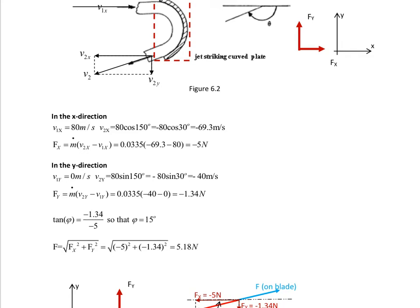If you look at the momentum equation, the X direction entering leaving is 80 cos 150 or minus 80 cos 30, which is minus 69.3 meters. We apply the momentum equation for the X direction and we get negative 5 newtons.